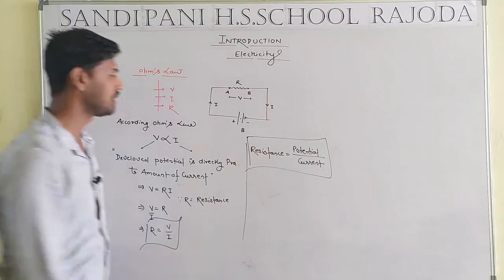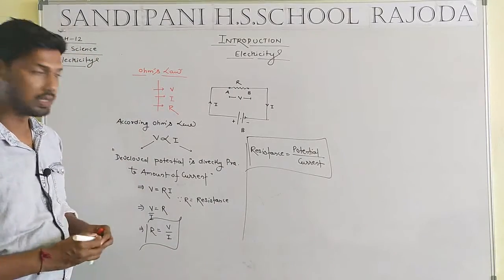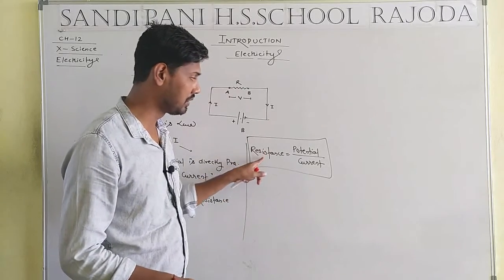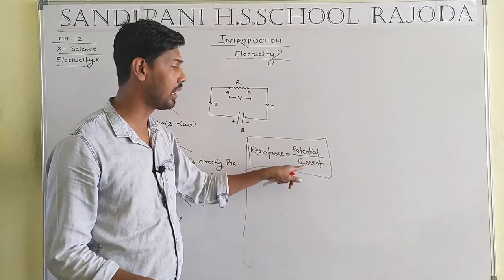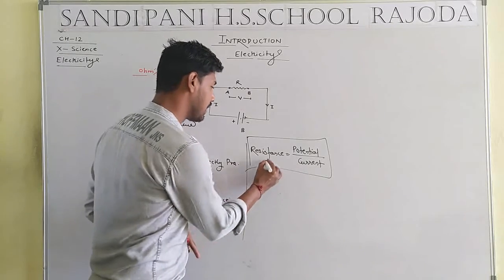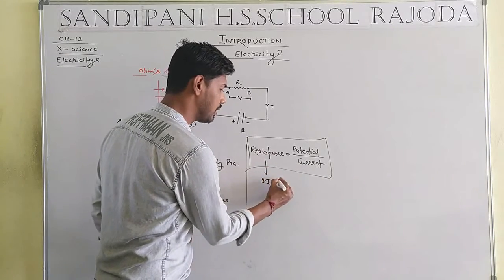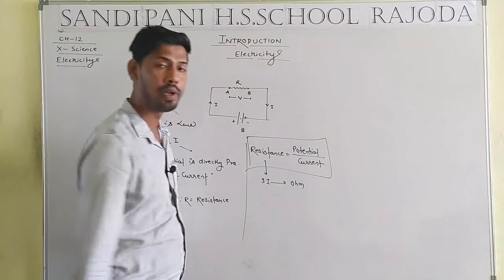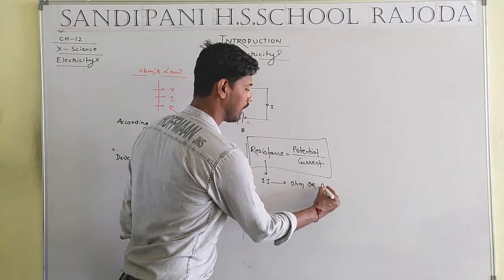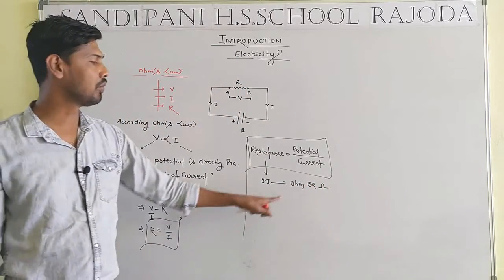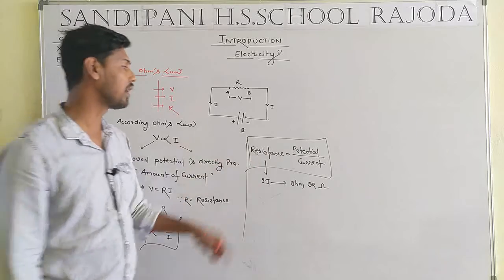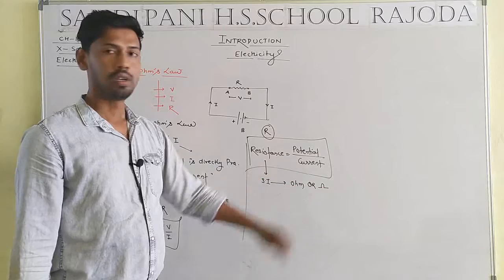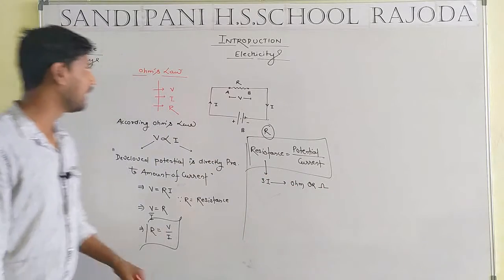What is the proper definition of resistance? According to Ohm's law, resistance is the ratio between potential and current. The SI unit of resistance is Ohm, represented by the symbol Ω.